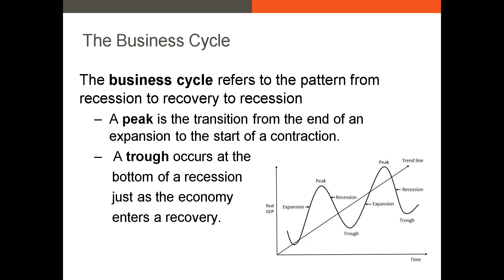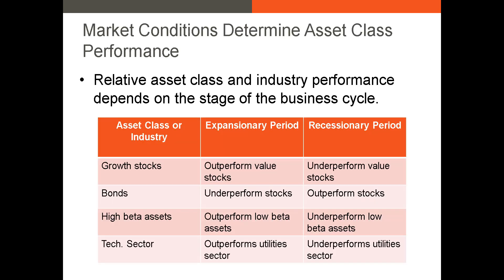If you've looked at an economy and determined it has the necessary conditions for economic growth, it's time to determine the current stage of the business cycle — the pattern from recession to recovery and back to recession. During expansionary periods, when GDP growth is positive, cyclical industries tend to perform quite well. During recessionary periods, investors flee to safety and low-risk assets. During expansionary periods, growth stocks — defined as stocks with high market-to-book ratios — have historically outperformed value stocks. During recessionary periods, investors tend to sell growth stocks and buy bonds or shares of less risky value stocks, causing those assets to outperform.